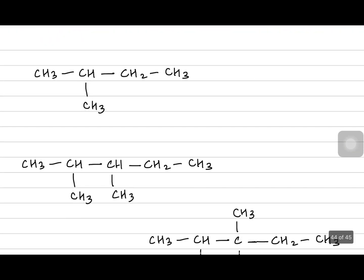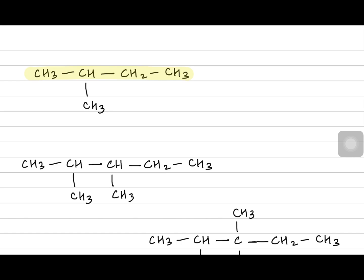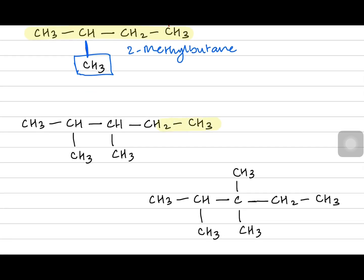Let's practice naming molecules. For the first structure, the longest chain has carbons one, two, three, four — it's butane — and there's a methyl branch on carbon two, so it's 2-methylbutane. For the second structure, the longest chain is five carbons (pentane) with a branch on carbon two and a branch on carbon three, so you call it 2,3-dimethylpentane.